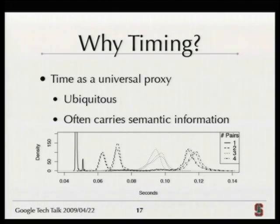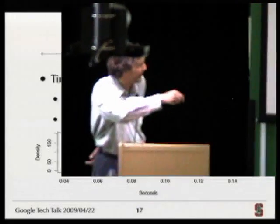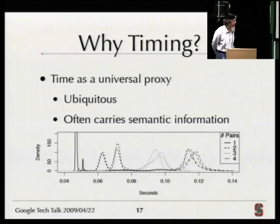Similarly, timing can help infer influence even through shared resources with no direct edge. If pairs of processes try to talk over a socket, the timing for them to exchange packets shifts heavily to the right as more pairs share the socket. So the timing of results on a shared resource carries a lot of information about what was going on at the time on that resource.